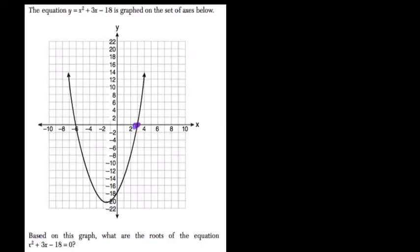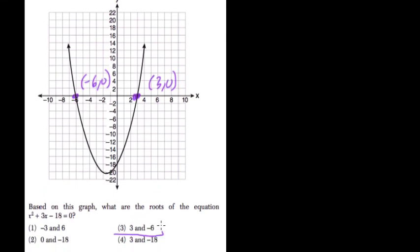In this question, they want to know what are the roots of this parabola. The roots are these two points where the parabola crosses the x-axis. This point is (3, 0), and this point is (negative 6, 0). So the roots are 3 and negative 6.